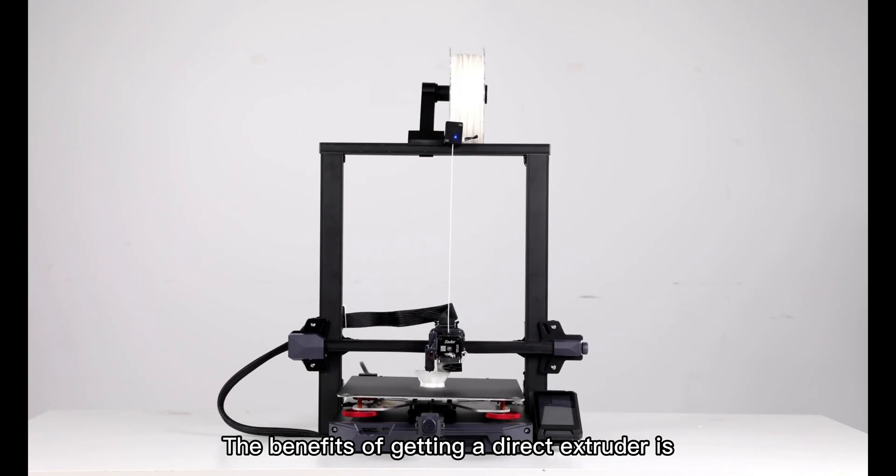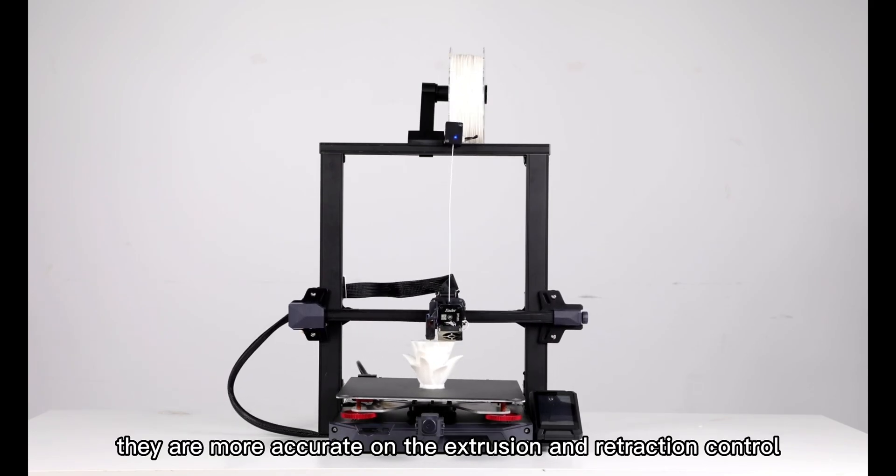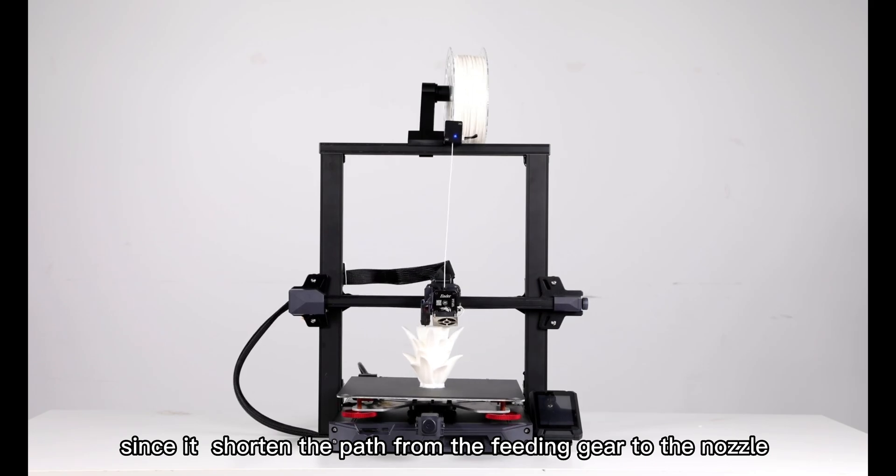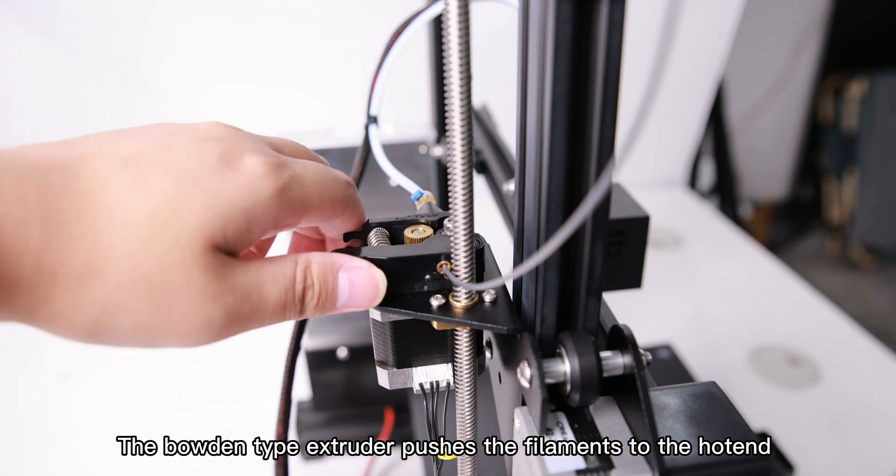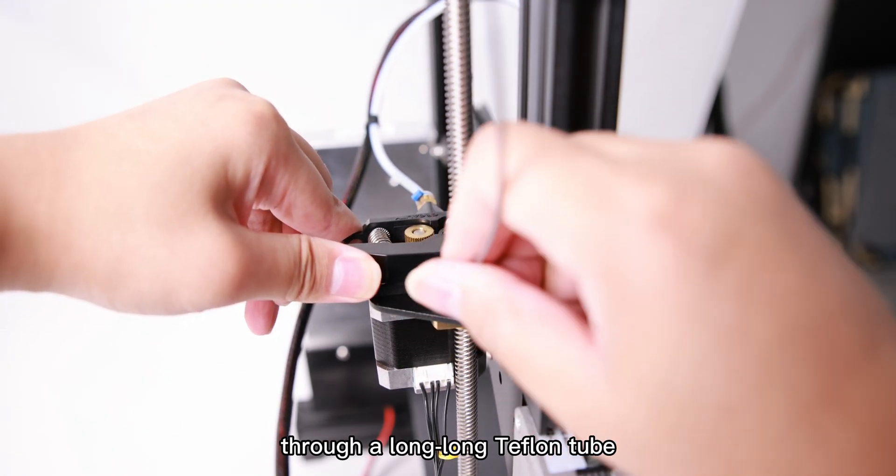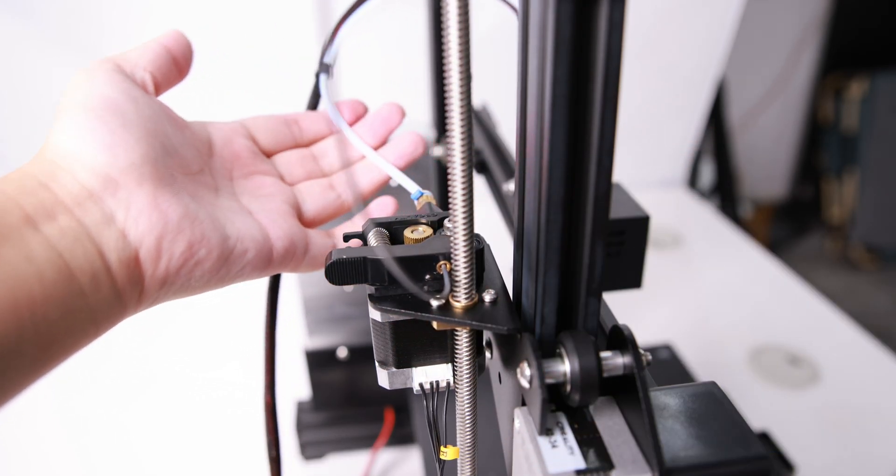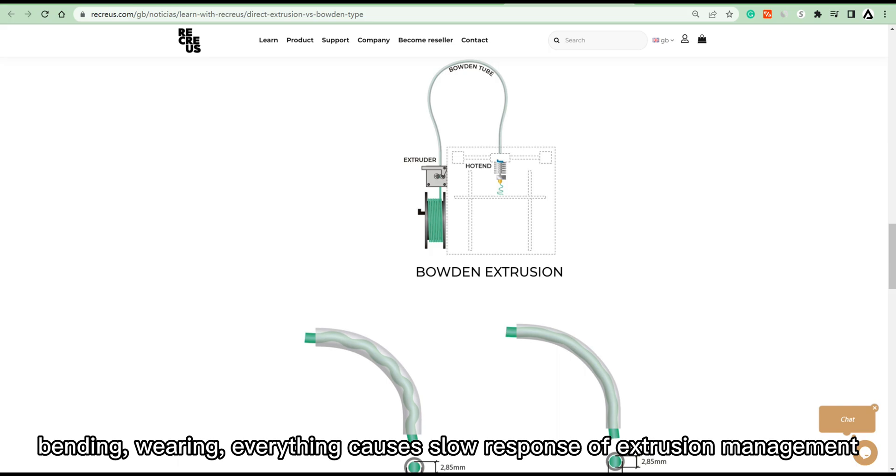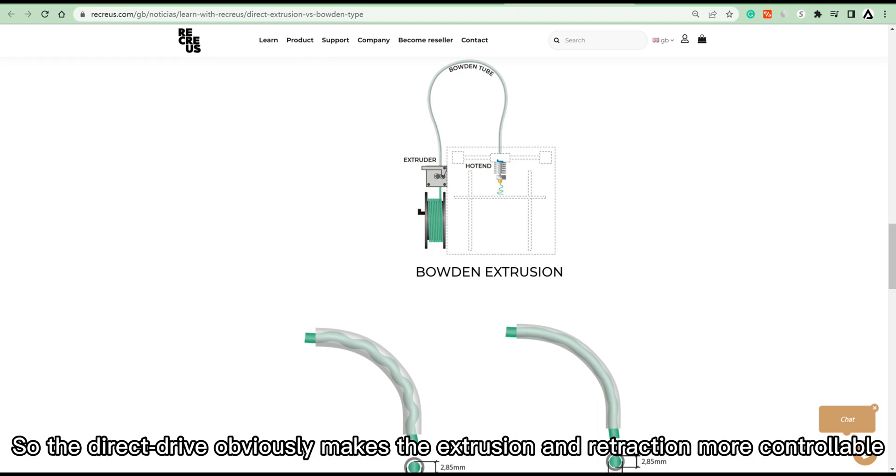The benefits of getting a Direct Extruder is they are more accurate on the extrusion and retraction control since it shortens the path from the feeding gear to the nozzle. The Bowden Type Extruder pushes the filaments to the hot end through a long Teflon tube. You never know what happens to the filament in that tube—bending, wearing, everything causes slow response of extrusion management. So Direct Drive obviously makes the extrusion and retraction more controllable.